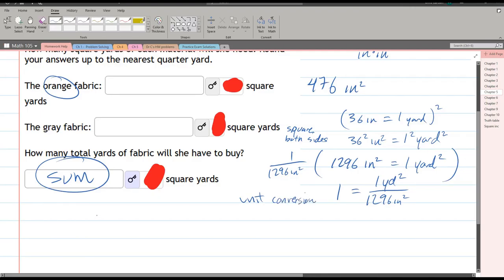We're going to convert our 476 inches squared. We're going to multiply it by one, and the version of one we're going to use is one square yard over 1296 square inches. Our inches squared cancels out.